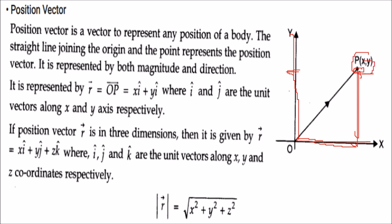Position vector is a vector to represent any position of a body. We have a straight line joining from the origin to this point. This line is the position vector. It is representing the magnitude from here to here and the direction as well.